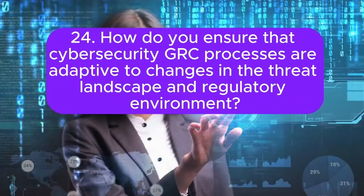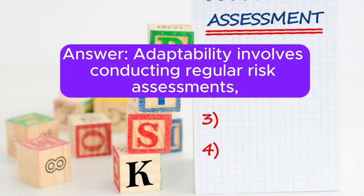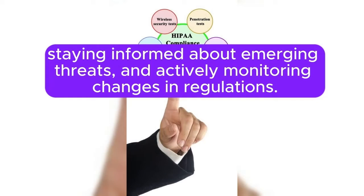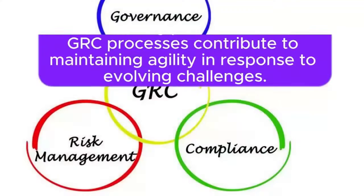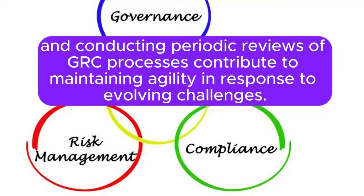Question 24: How do you ensure that cybersecurity GRC processes are adaptive to changes in the threat landscape and regulatory environment? Answer: Adaptability involves conducting regular risk assessments, staying informed about emerging threats, and actively monitoring changes in regulations. Establishing a feedback loop with threat intelligence sources, participating in industry forums, and conducting periodic reviews of GRC processes contribute to maintaining agility in response to evolving challenges.